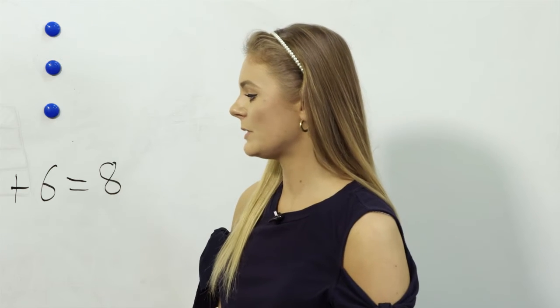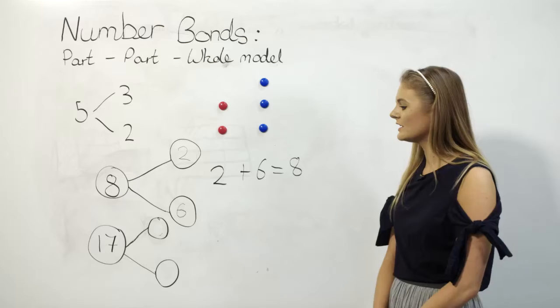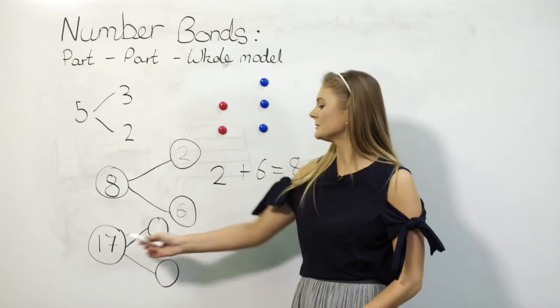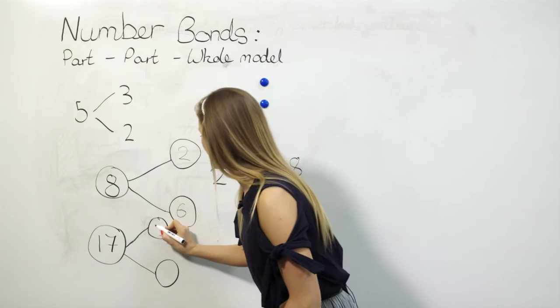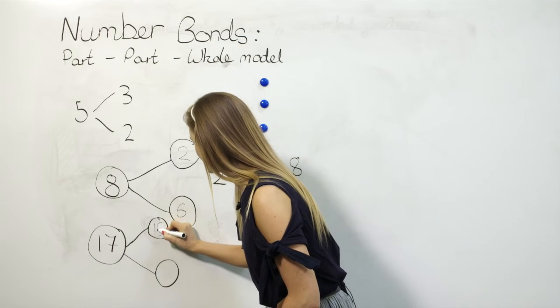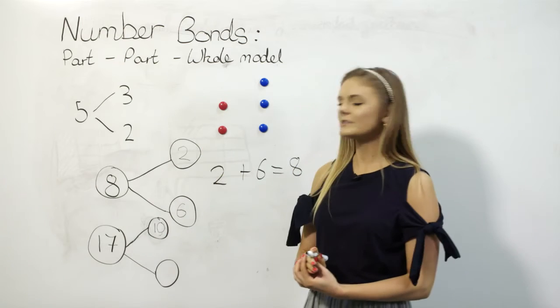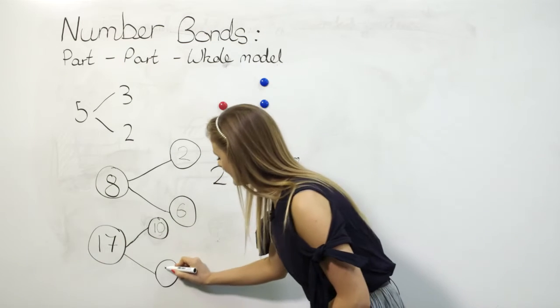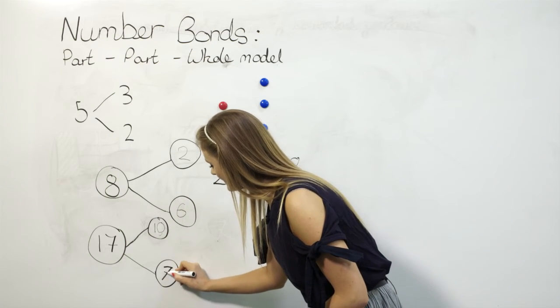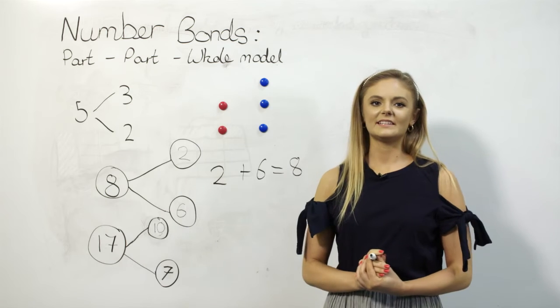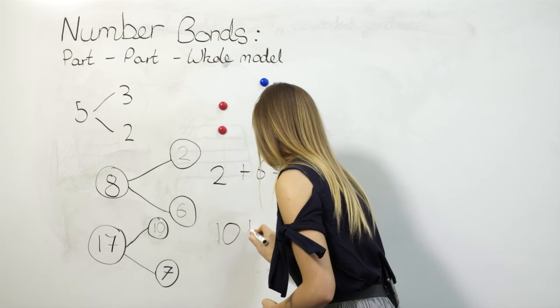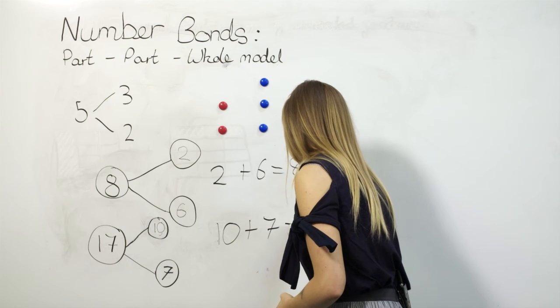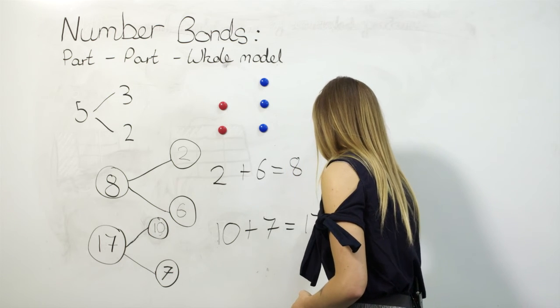Furthermore, this part-part-whole model can be used to partition tens and ones. Here we've got 17 as the whole in this bubble. We can partition that into 1 ten, so I'll write that up here, and then we've got 7 ones, which I can write down here. This can then be written as the calculation 10 + 7 = 17, which is the whole.